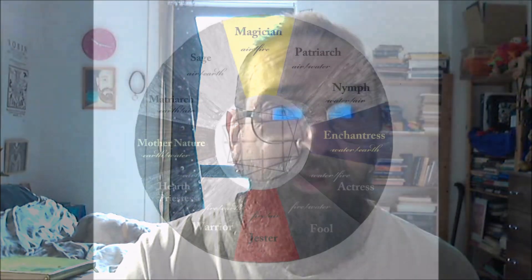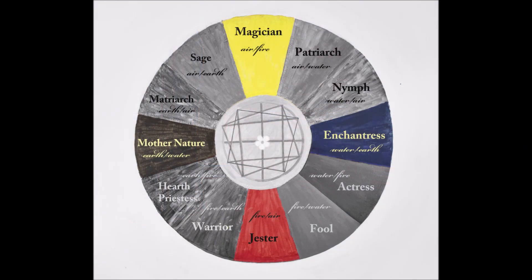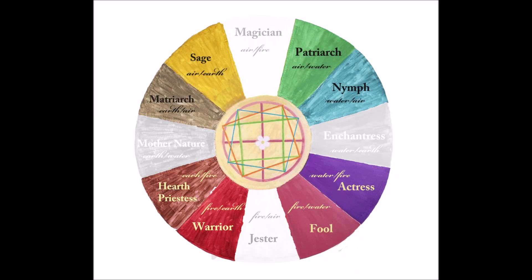Now, the difference that I've seen come about with the work of Brian Collinwood is that we start to see a differentiation within this scheme into two functional groups, essentially. One is the Cardinals, which are the Jester, the Magician, Mother Nature, and the Enchantress, who form the Cardinals of the Elements. The other group is the Quadrant archetypes, which are the Matriarch and Sage for Earth and Air, the Patriarch and Child or Angel or Nymph for Air and Water, the Actress and the Fool for Fire and Water, and the Warrior and the Queen or Hearth Priestess for Earth and Fire.